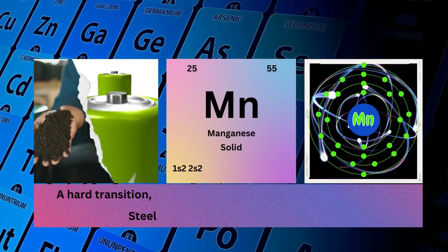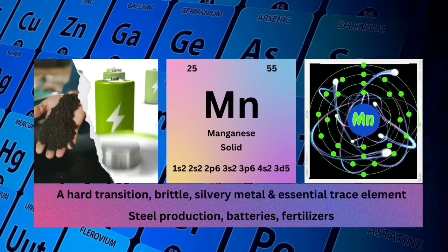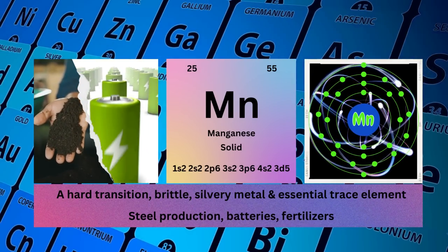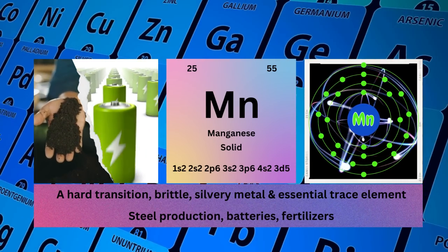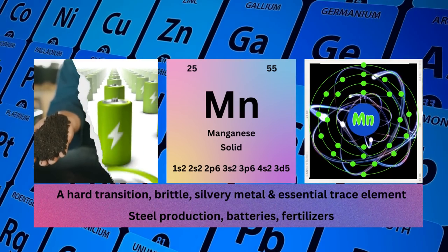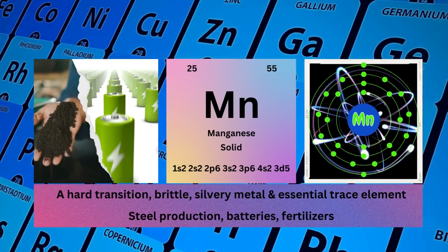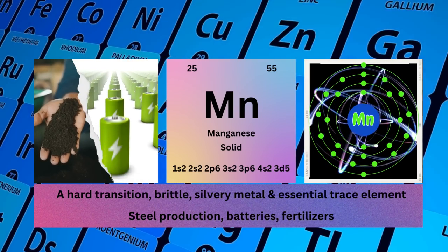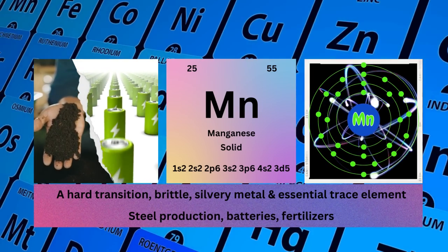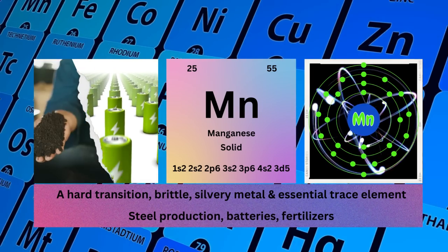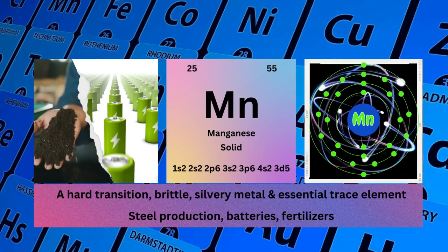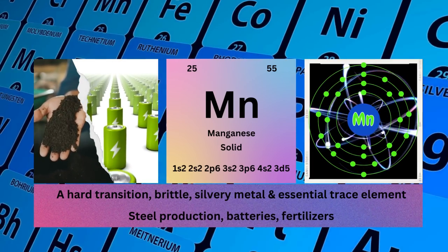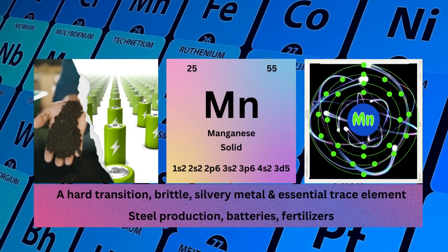Manganese. Atomic No. 25. Mass No. 55. Symbol Mn. State Solid. Electronic Configuration 1S2 2S2 2P6 3S2 3P6 4S2 3D5. Physical Properties: A Hard, Brittle, Silvery Transition Metal and Essential Trace Element. Manganese is used for steel production, batteries, and fertilizers.